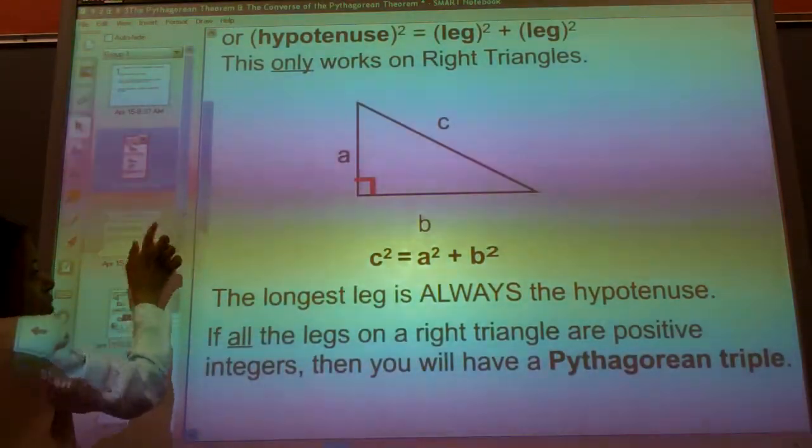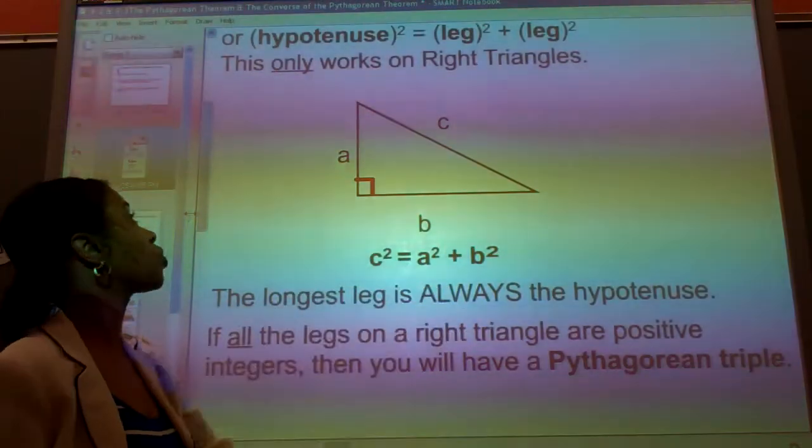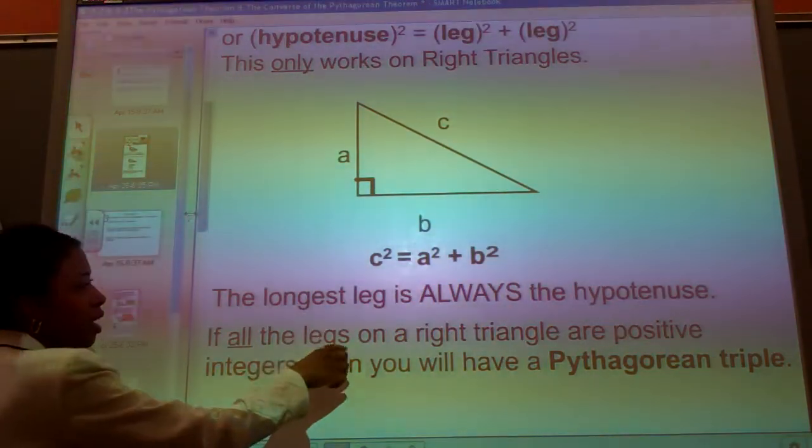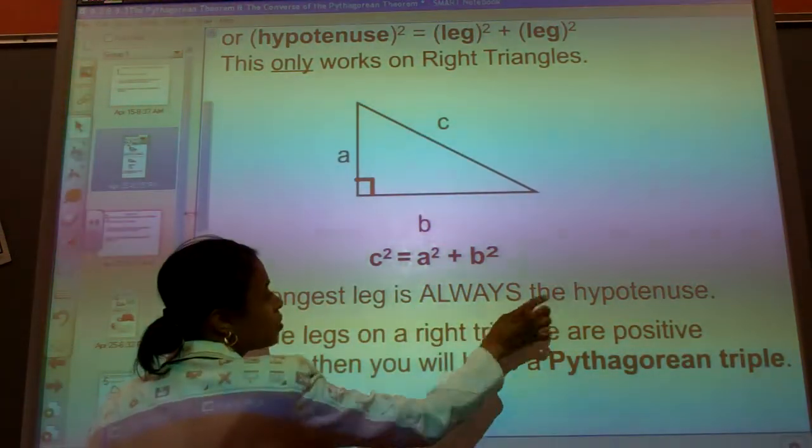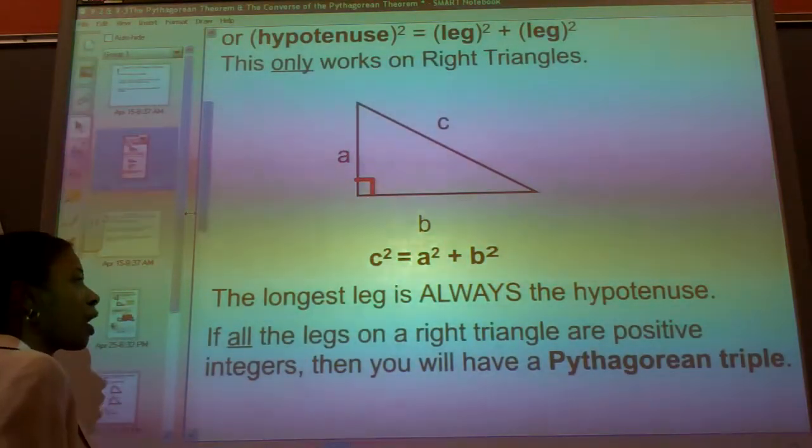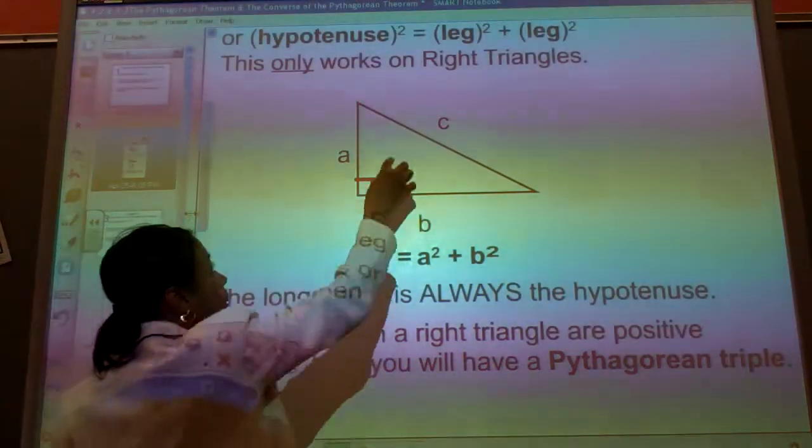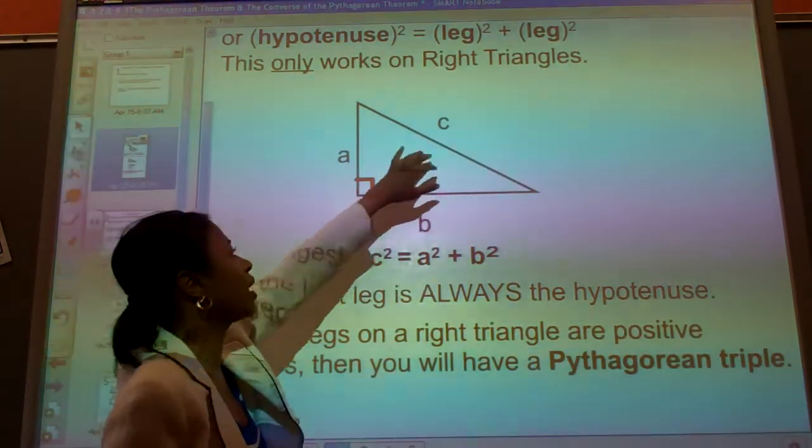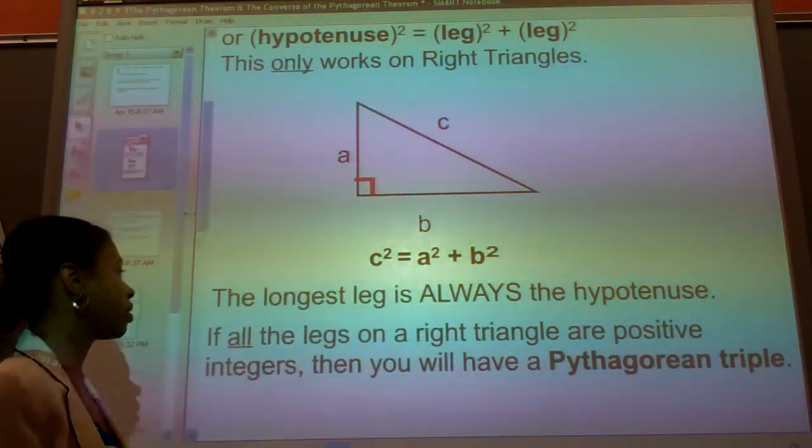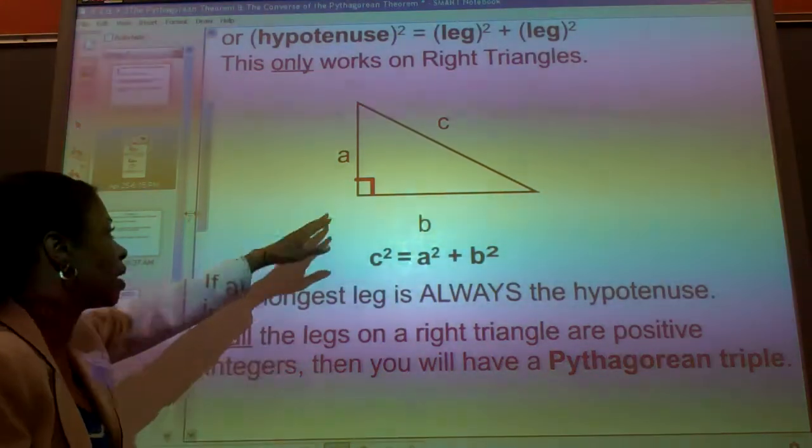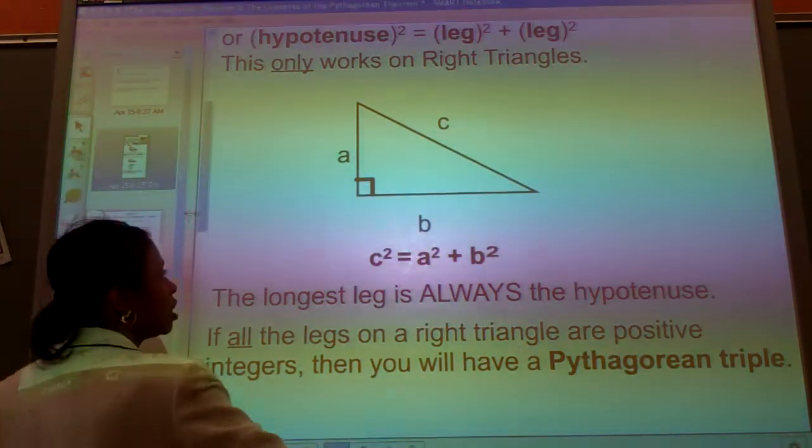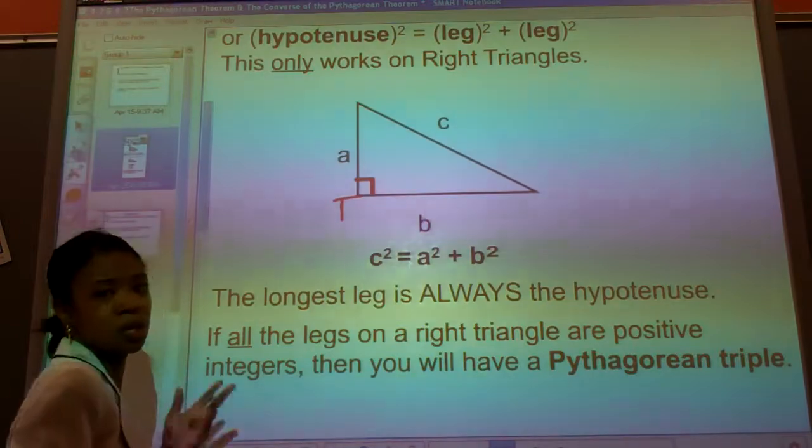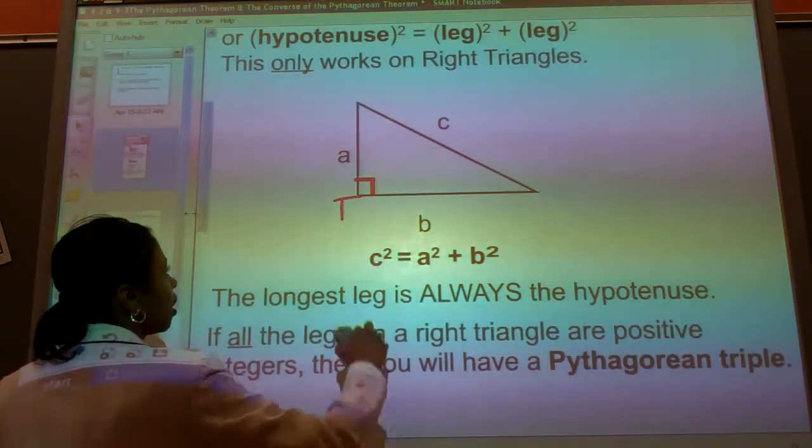So here it is. C squared is equal to A squared plus B squared. The longest leg is always going to be the hypotenuse on a right triangle. And the hypotenuse or the longest leg on the right triangle is always opposite the right angle. And it has that marker in the corner, or it will say in the problem that whatever angle, if this is angle T, they will say angle T is the right angle.